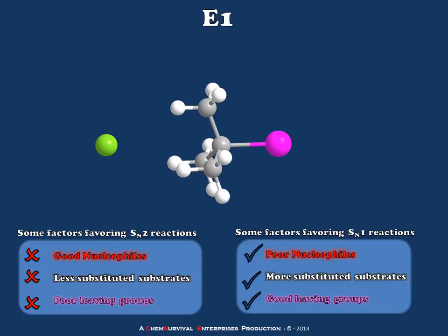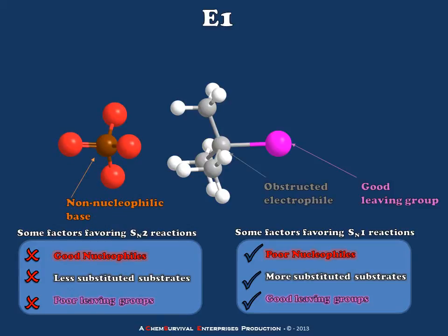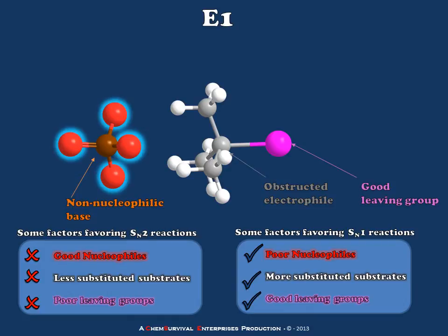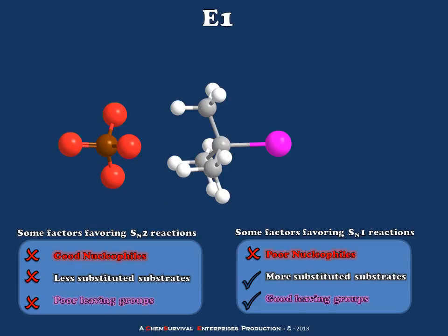So here we have our reactants again, but now I'm going to make a change. I'm going to change my weak nucleophile into something that is completely non-nucleophilic. I'm going to use something like phosphate anion. Now the phosphate anion would be considered a non-nucleophilic base because its electron cloud is so delocalized by resonance — it's so large and squishy and soft and big — that it doesn't act like a nucleophile. It doesn't attack other electrophiles in search of making a bond. So all that delocalization weakens the nucleophile. That means that in my chart below I need to replace one of my check marks on the SN1 box. So now we have no nucleophile whatsoever, but we do have something which can act as a base. Let's see how that affects the reaction.